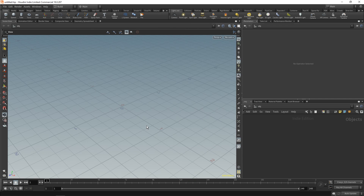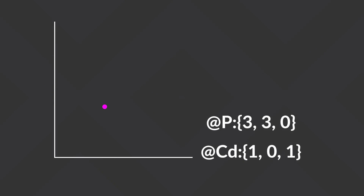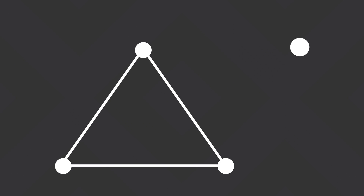This is a bit more technical. We're talking about vertices, points, and primitives. In Houdini, a point is a position in space - it simply holds a position and can also hold attributes, which is the basis of a point attribute. If you have two or more points and connect them, you get what is known as a primitive - multiple connected points. You can connect two points to create a line primitive, three points for a triangle, or four points for a quad.